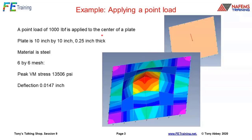The first example is applying a point load on a 10 by 10 by quarter-inch rectangular plate, with a thousand pound force applied in the middle. Using a very coarse six-by-six mesh with stress averaging switched off, each element tries to get a stress distribution using its own internal shape function. We get a very peaky result — 13,506 PSI von Mises stress at the center — and a particular deflection.